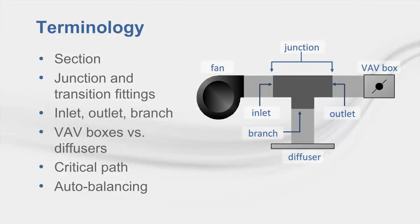To use Duct Designer you'll need to understand the terminology used in the application. A section is all ductwork from the inlet of a junction or transition fitting to the inlet of the next downstream junction or transition fitting. A root section is connected directly to the supply fan outlet. Junction and transition fittings connect the sections of ductwork. Inline fittings join, adjust, or adapt other duct system components within duct sections.